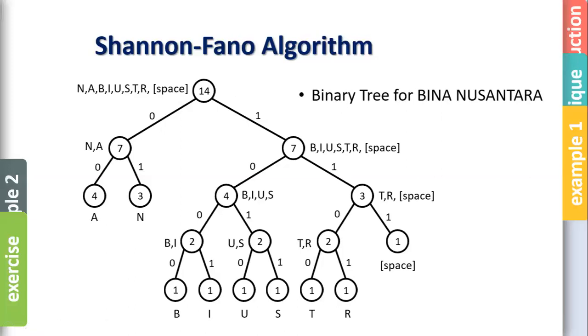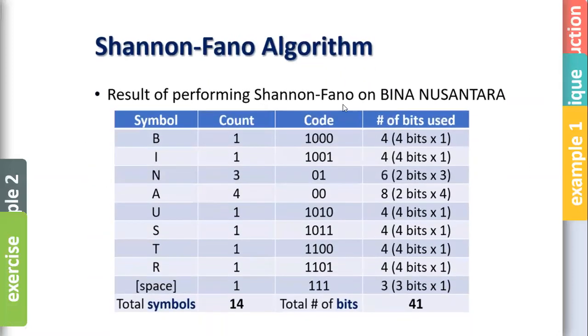So if you put it in the table, you will get like this. This is the symbols. It counts. 14 total characters or symbols. This is the code. Like I said before, B is 1000 is 4 bits. I is 4 bits. N is 2 bits. A also 2 bits. U, S, T, R, 4 bits. And space is 3 bits.